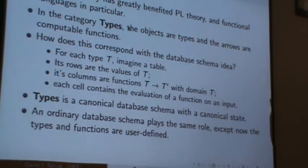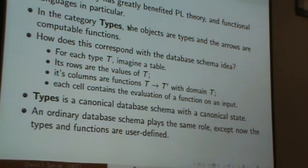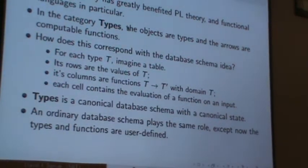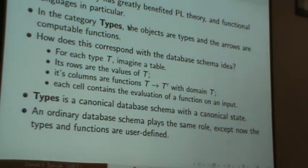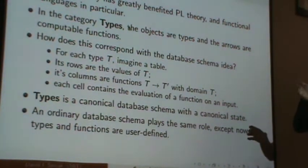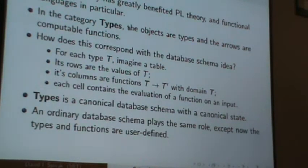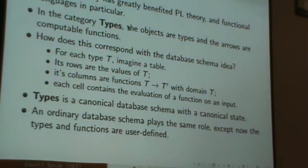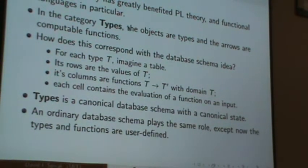imagine a table and the rows are the values of that thing. So you have every integer in the integer table. And the columns of the integer table are every function out of integers. Its parity goes to bool or something. You know, even question mark goes to bool. Its square goes to integers, et cetera. All of those are columns of that data, of that table called integers. And each cell just contains the value - given input row and the function name column, it just tells you the value, the evaluation of that function on that input.